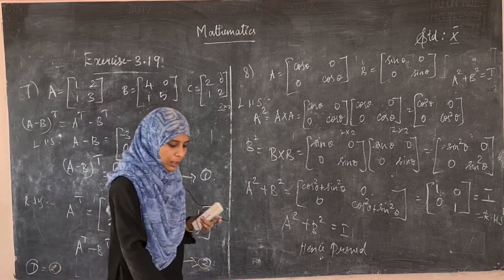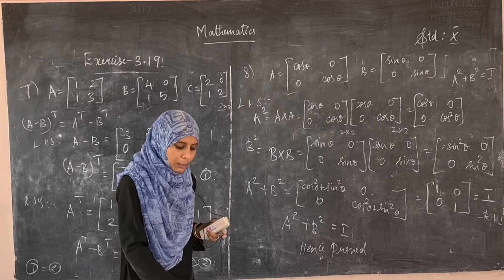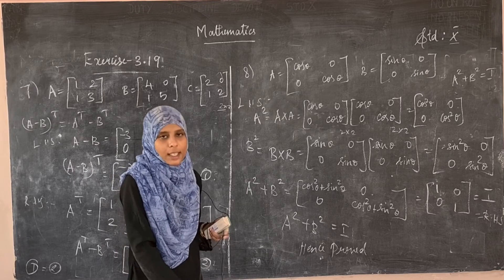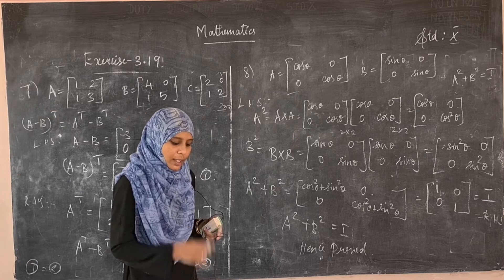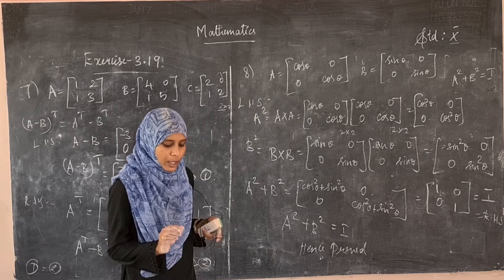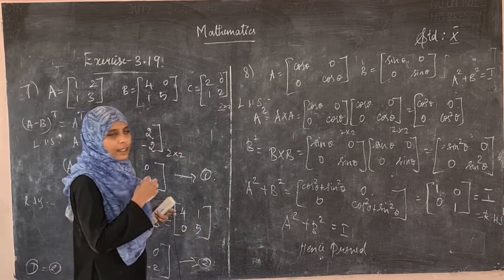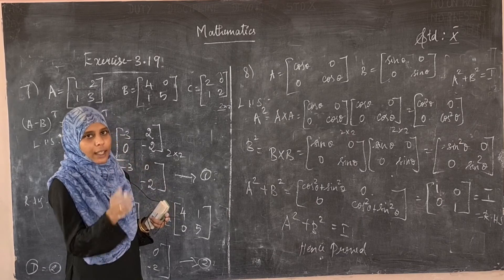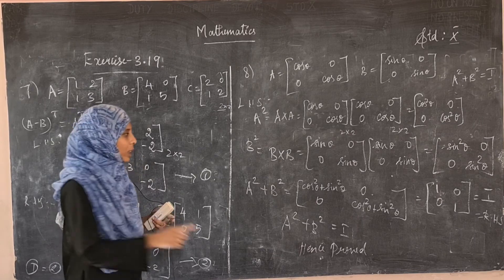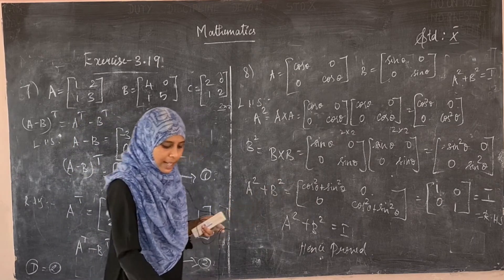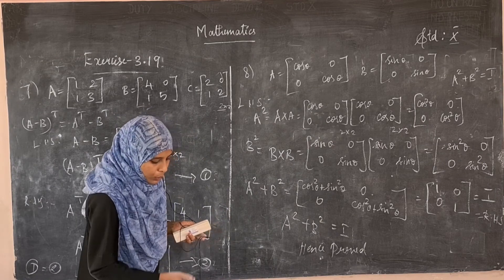For the ninth sum, they have given matrix A = [cosθ, sinθ; −cosθ, cosθ]. We have to prove A×A^T = I. You have to first find A^T, then multiply A and A^T, and show it equals the unit matrix I. This is the assignment for you.